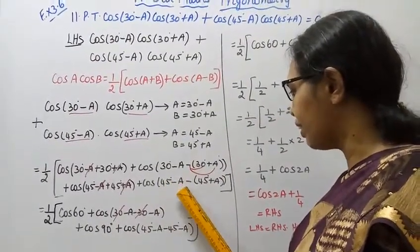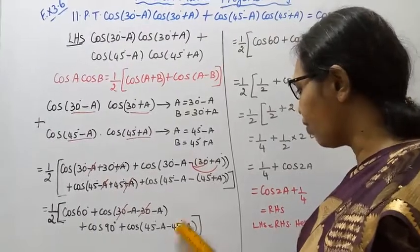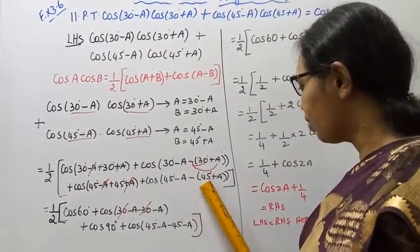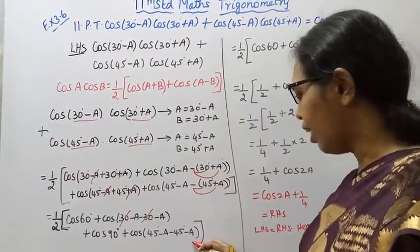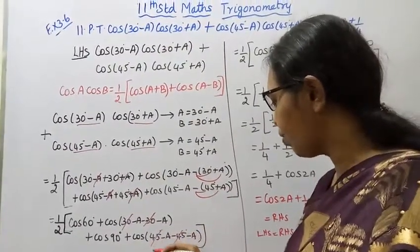45 minus A minus 45, minus A, minus 45 plus 45 cancels.